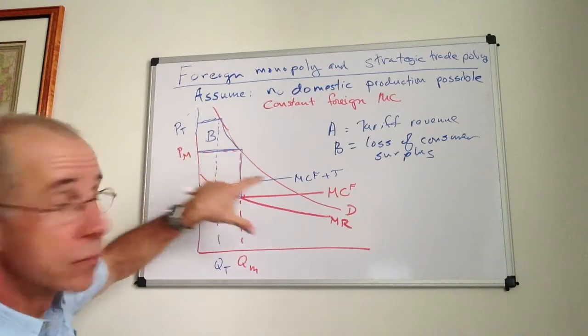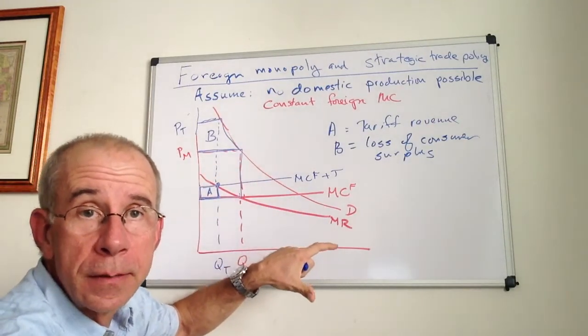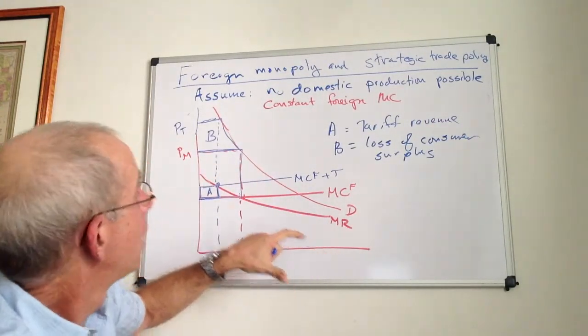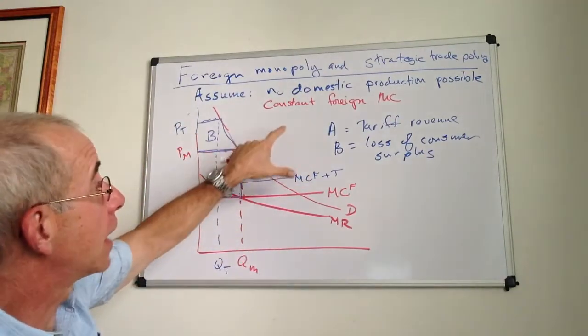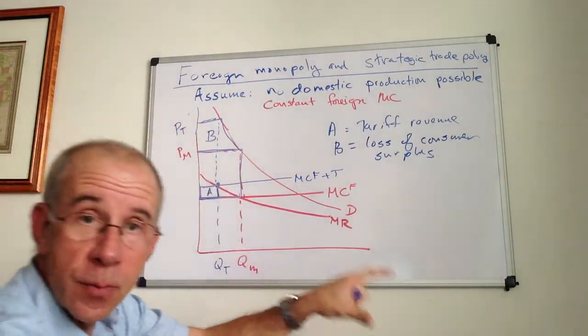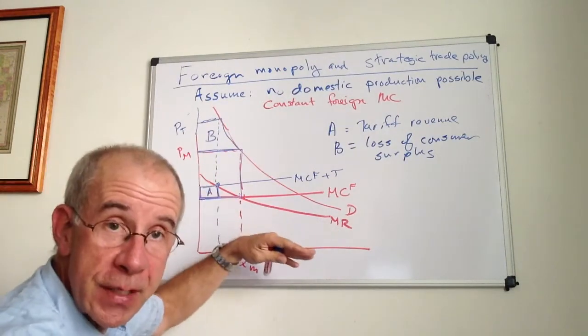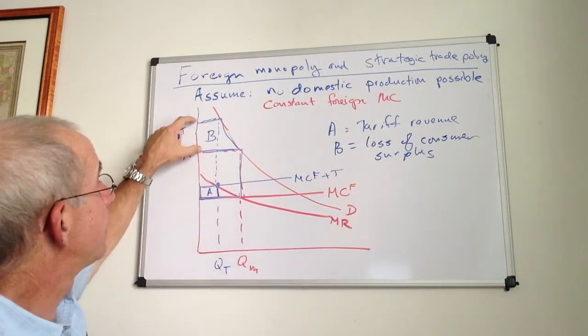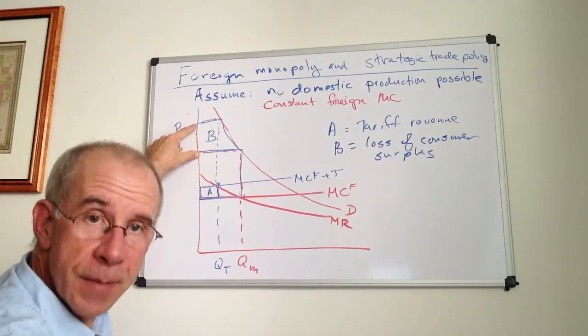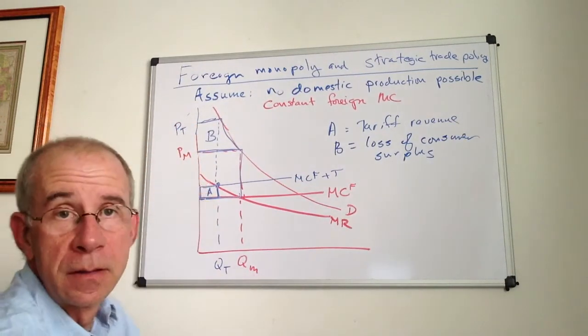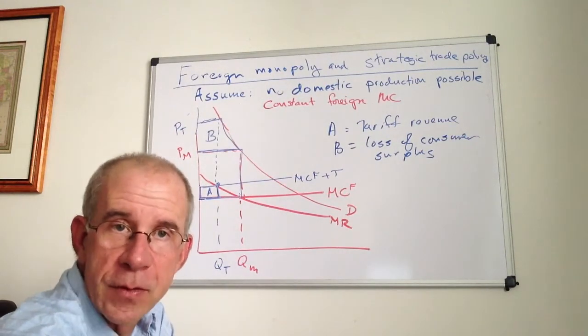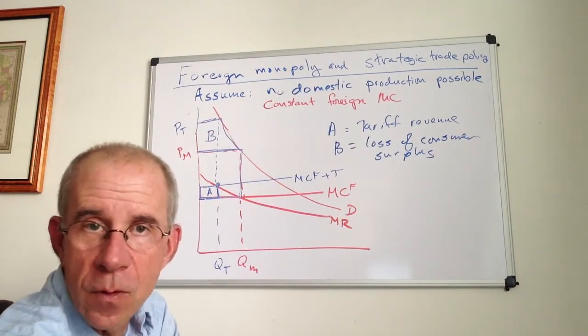Just looking at this in a diagram, and this turns out to be true mathematically, in this case with constant price elasticity of demand and the marginal revenue curve steeper than the demand curve, the losses to domestic consumers, area B, is going to exceed the tariff revenue gained at the expense of the foreign monopolist.